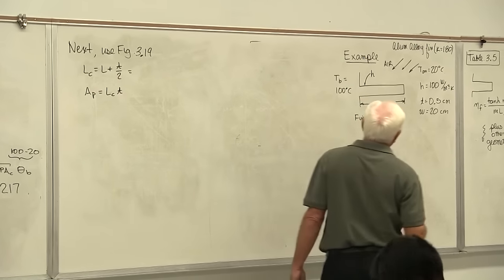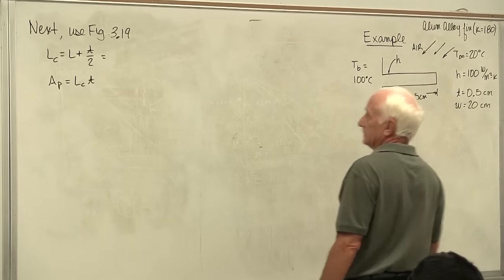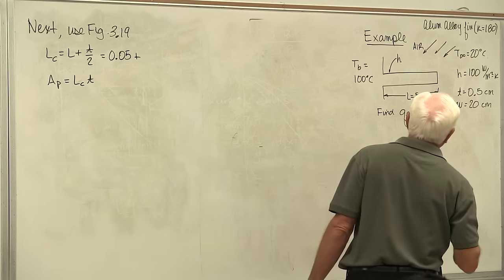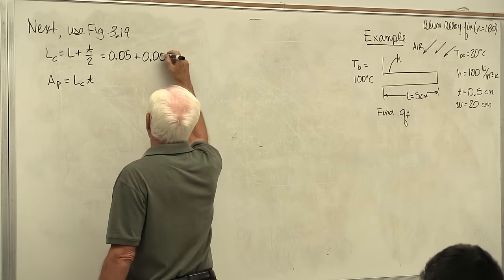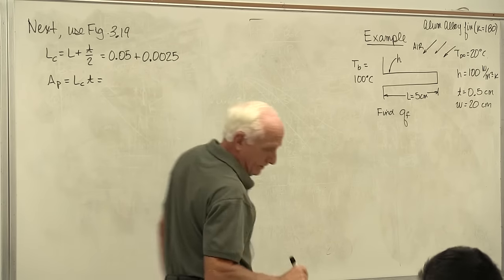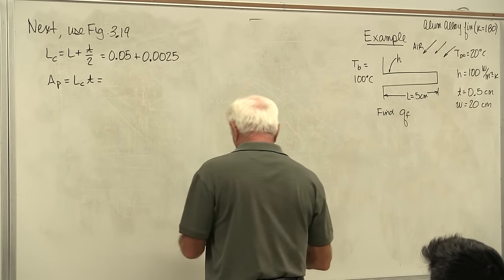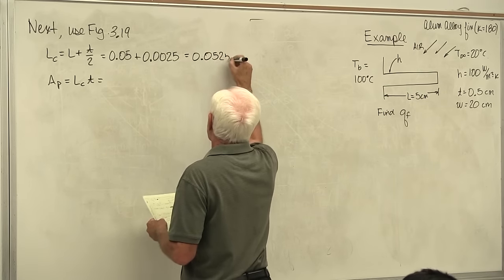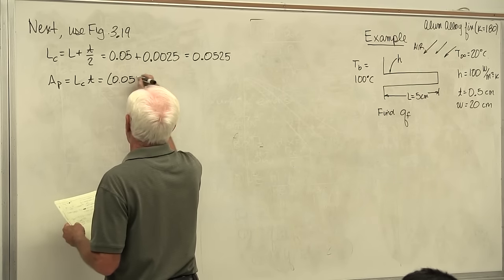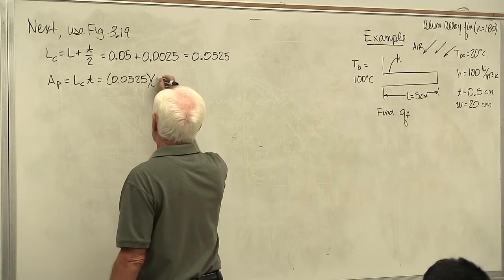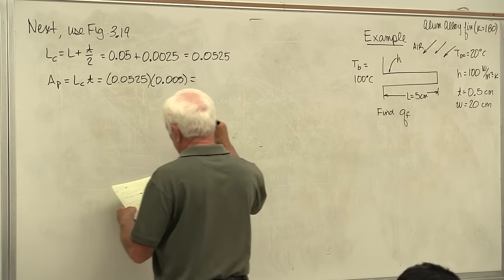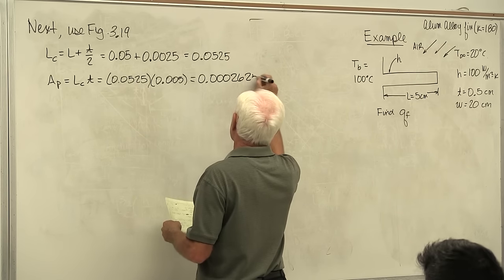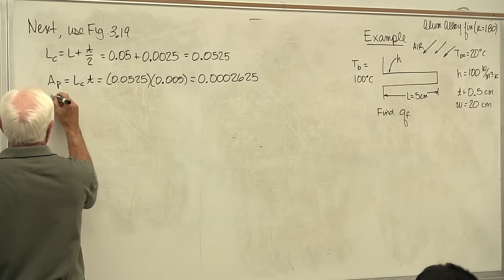With L equal to 5 centimeters and T equal to half a centimeter, Lc equals 5.25 cm and Ap equals Lc times T. The x-axis parameter for the graph works out to 0.553. We go to the graph, find the x-axis value of 0.553, go up vertically to the rectangular fin line, then read across horizontally to get the fin efficiency.